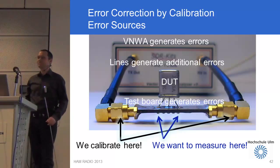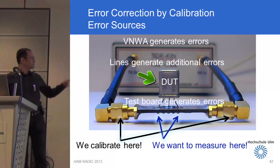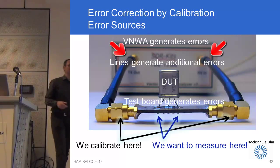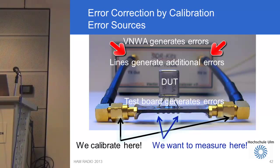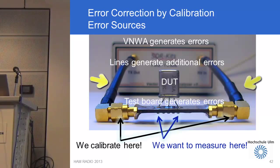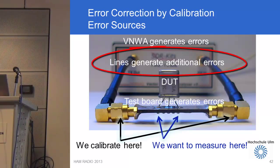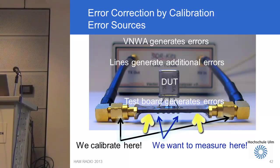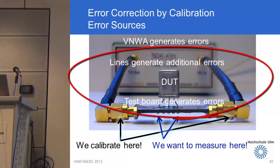Besides the measurement setup, there is more to consider: what are we measuring and how do we measure correctly? The VNWA on its own introduces measuring errors. The internal bridge is not perfect, and the transmitter and receiver have frequency dependencies which we do not know exactly. We are not connecting the test object directly to the RX and TX ports — we have test cables in between, causing phase shift and attenuation, thus introducing further errors. Additionally, the test object has short wires, and the test jig has PCB tracks, also introducing measuring errors.